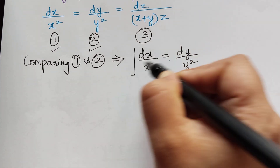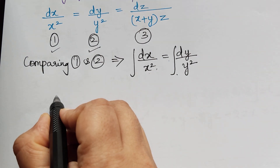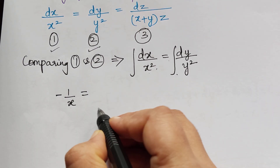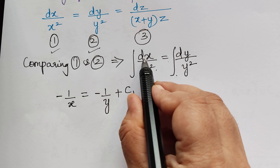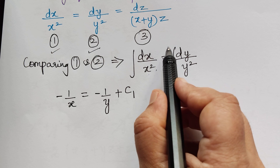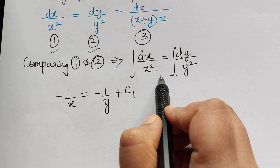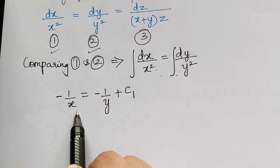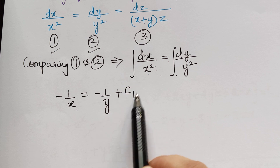Now integrating on both sides, the integration of 1 by x squared dx gives negative 1 by x, and the integration of 1 by y squared gives negative 1 by y plus a constant c1. This is integrated using the formula x to the power n, where x squared becomes x to the power minus 2, and applying x power n plus 1 divided by n plus 1, giving negative 1 by x.